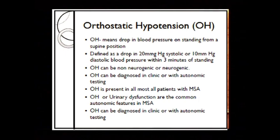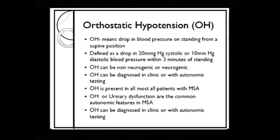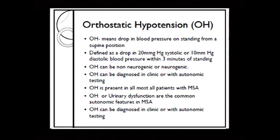Orthostatic hypotension has come up in the previous two talks. It means there's a drop in blood pressure when you change from a supine position — lying down — to either sitting or standing. Blood pressure has two values: the top one is called systolic and the bottom one is called diastolic. We define orthostatic hypotension as a drop of 20 mmHg in the systolic value or 10 mmHg in the diastolic value.